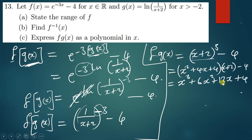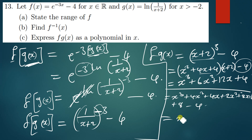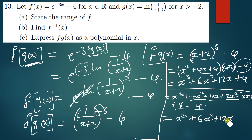Let's do the expansion together: x times x squared gives x cubed; x times 4x gives 4x squared; x times 4 gives 4x; 2 times x squared gives 2x squared; 2 times 4x gives 8x; 2 times 4 gives 8; then minus 4. Collecting like terms: x cubed; 4x squared plus 2x squared gives 6x squared; 4x plus 8x gives 12x; 8 minus 4 gives positive 4. So the final answer is x cubed plus 6x squared plus 12x plus 4.